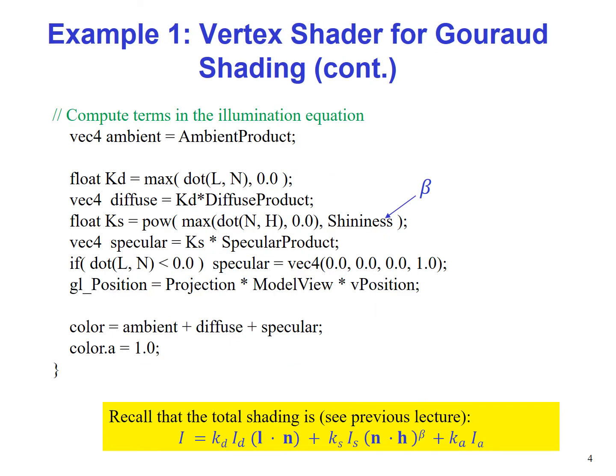So proceeding with the rest of the code of the main function of the GLSL vertex shader, we compute the terms in the illumination equation. The ambient product we just put it into the ambient vector. Why do we assign these values to another vector? That's because the ambient product is a uniform variable and we cannot change it inside the shaders.